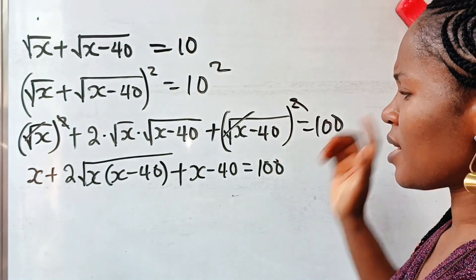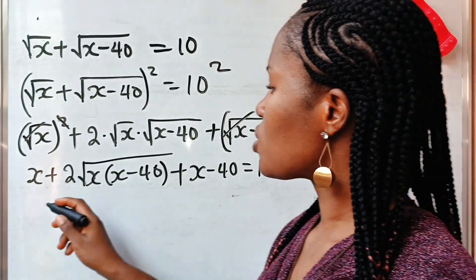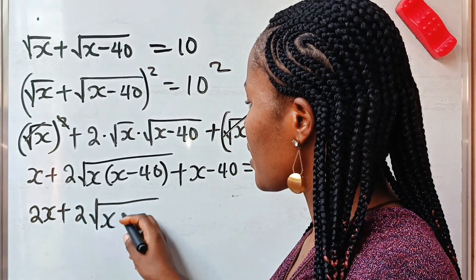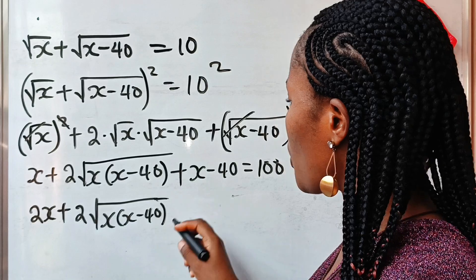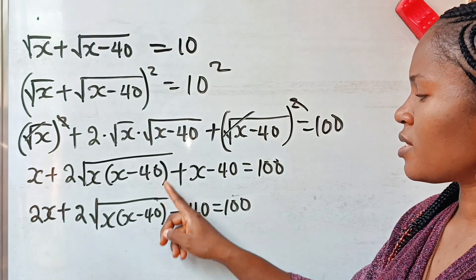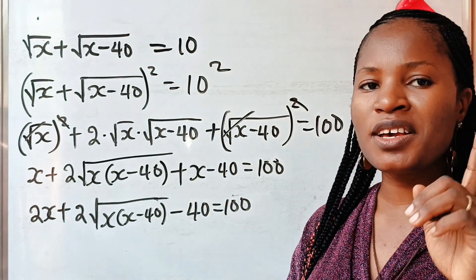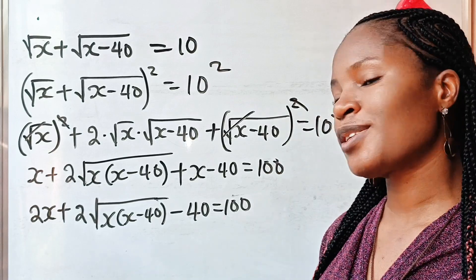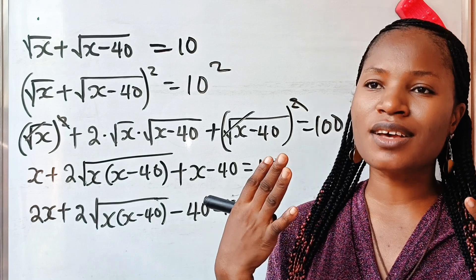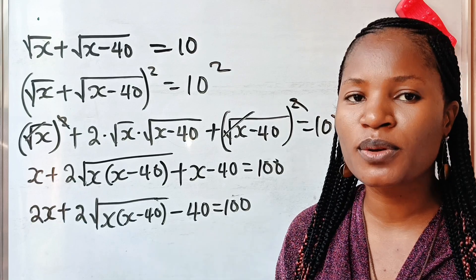Now let us collect like terms. x plus x gives us 2x. So we have 2x plus 2 root of x bracket x minus 40, then minus 40 is equal to 100. Now let's transfer this minus 40 to the other side and it becomes plus 40. But please hit the subscription button and turn on your notification bell if this is the first time you are visiting this channel, so that you will always be notified any time I upload a new video.